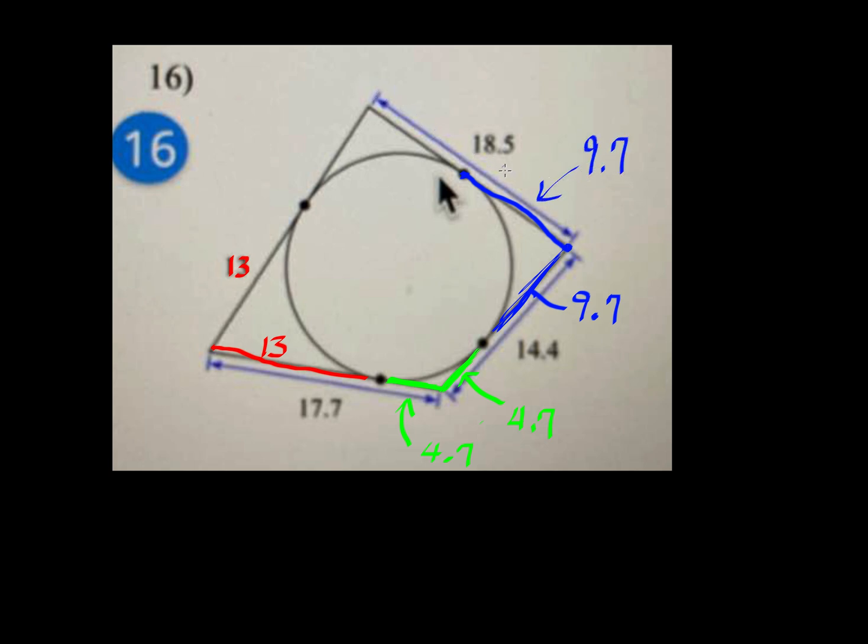But then, again, the whole thing is 18.5, which makes, let me use a different color. This portion right there, 18.5 minus 9.7, that's, I think it's 8.8.